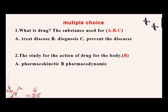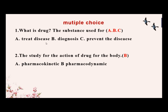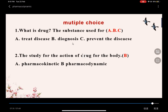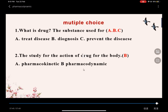Multiple choice. Question one: What is a drug? A — treat disease. B — diagnosis. C — prevent disease. The answer is A, B, and C. Question two: The study of the action of a drug on the body. A — pharmacokinetics. B — pharmacodynamics. The answer is B.